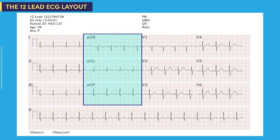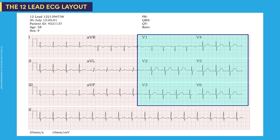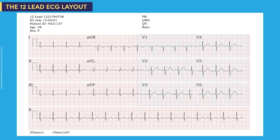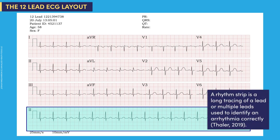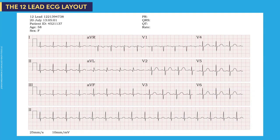The layout also includes augmented limb leads AVR, AVL, and AVF, and precordial leads V1 through V6. On this ECG, lead 2 is the rhythm strip. A rhythm strip is a long tracing of a lead or multiple leads used to identify an arrhythmia correctly.